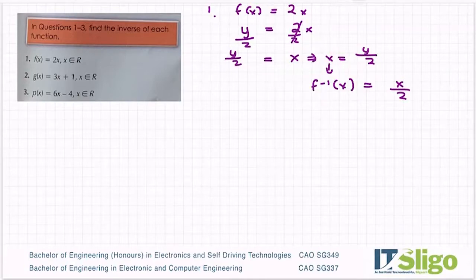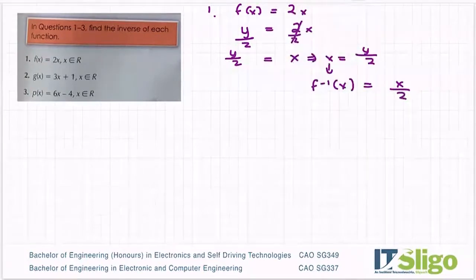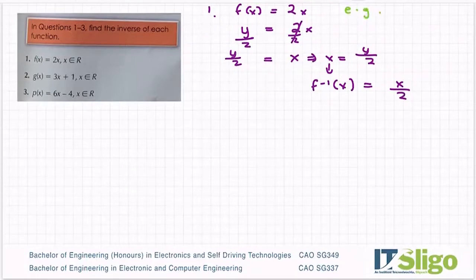And you can test this if you wish, because remember what the theory said. f inverse of f of x would give you x. One cancels the other out. So if I start off with x is equal to 3, for example. Well then if I feed that into f(x), I get 2 times 3, which is 6.